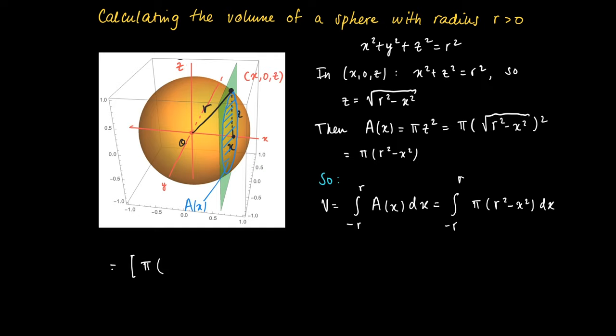Of course, this is just an easy quadratic function of which we can calculate the primitive. So as a primitive, we find r squared x minus 1 over 3 x to the power 3 times pi, and the integration boundaries are given by minus r and r.